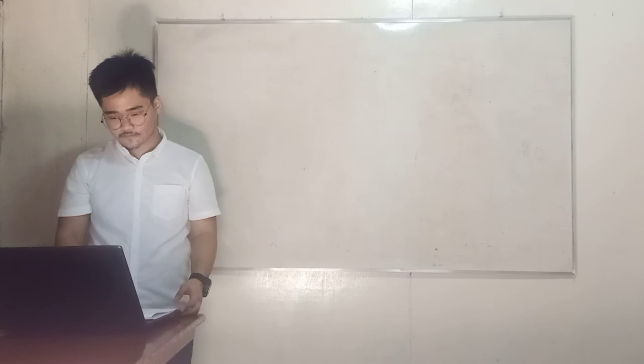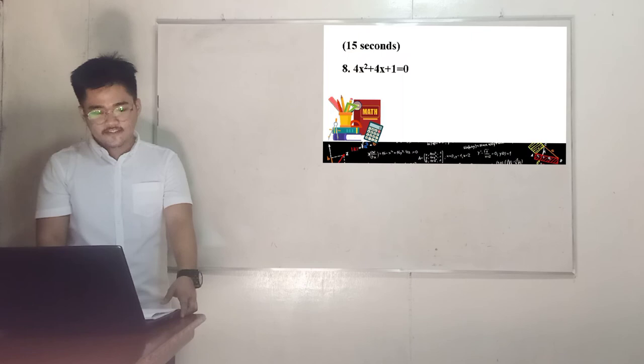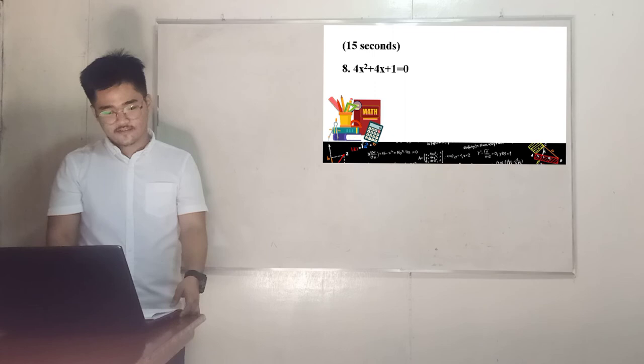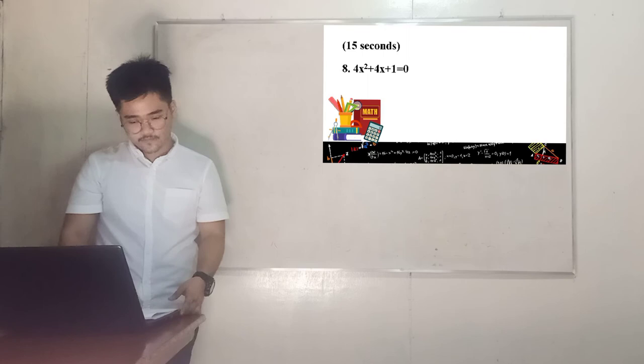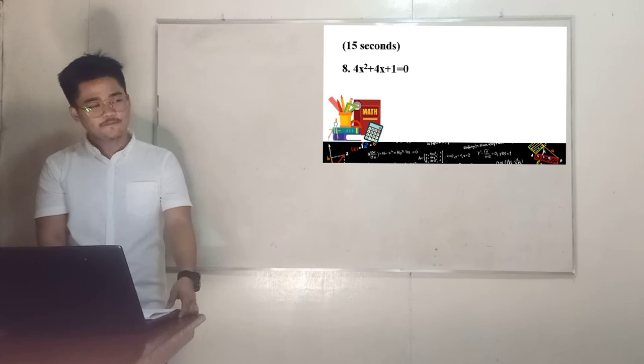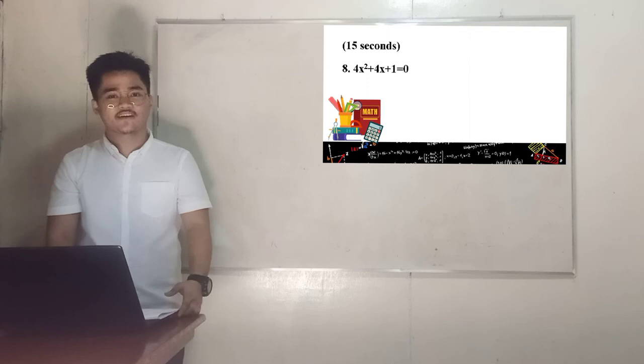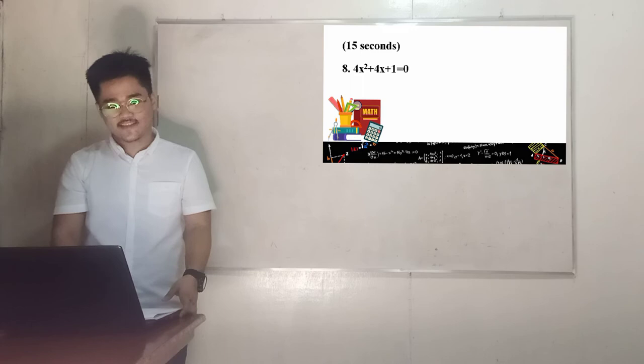Number 8: We have 4x squared plus 4x plus 1 equals 0. Time starts now. Okay, time's up. Raise your boards. Congrats yellow team, you got the correct answer. Also, green and red team got the correct answer. X equals negative 1 half.